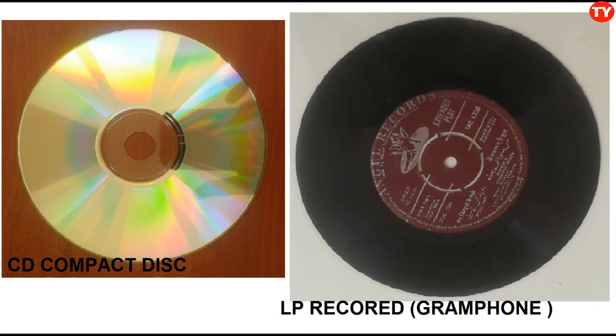We are going to discuss gramophone records and compact discs — CDs. I will explain the differences between CDs and LP records. First, on a CD surface, the audio signal is stored in a digital format.